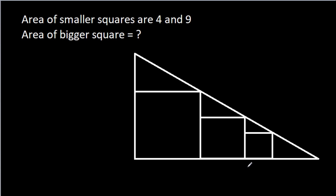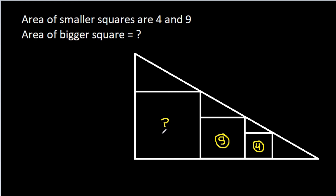In this video, we have been given that the areas of the smaller squares are 4 and 9. We have to find the area of the bigger square.